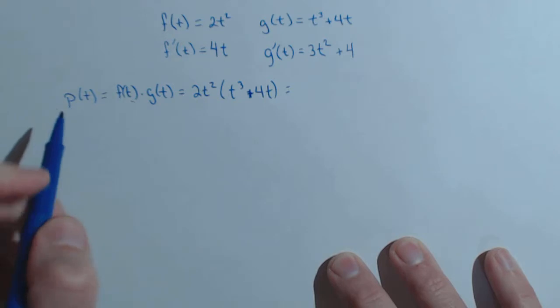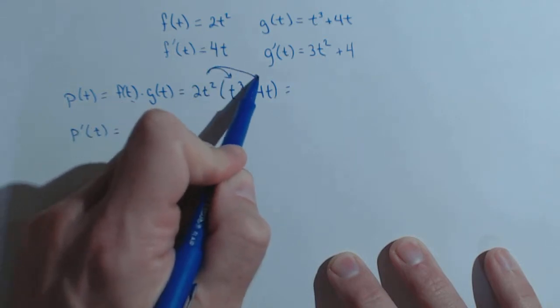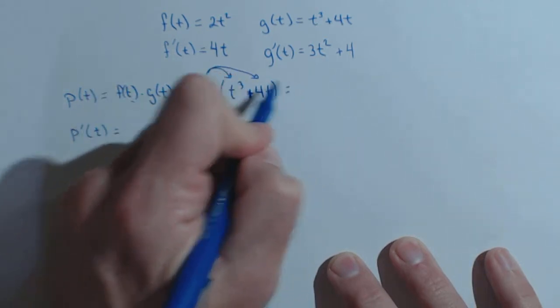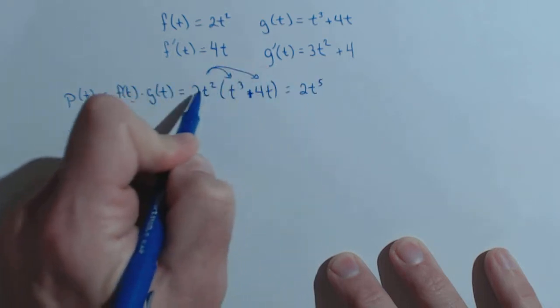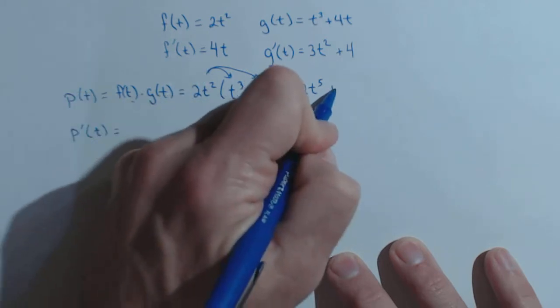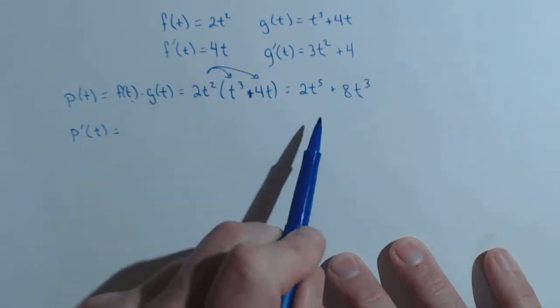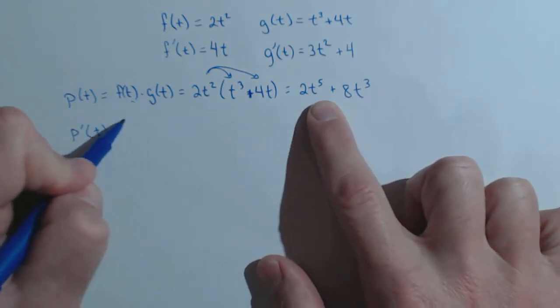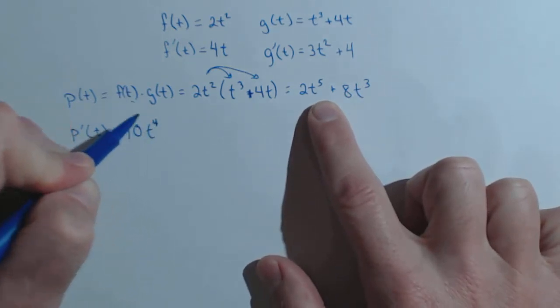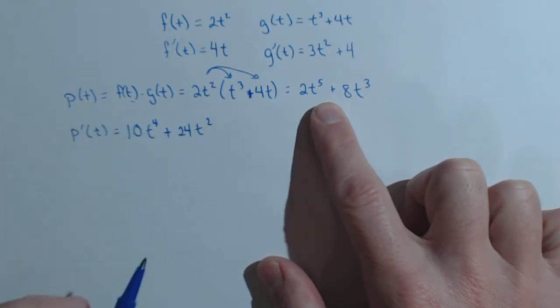Now what we're going to do is see what the derivative is of p, but to do that, I'm going to go ahead and distribute. So I've got 2t squared times t cubed is 2t to the fifth, and 2t squared times 4t is 8t cubed. So the derivative of p is going to be the derivative of this function here, which is going to be 10t to the fourth plus 24t squared.